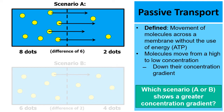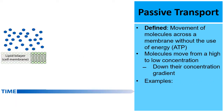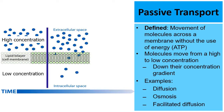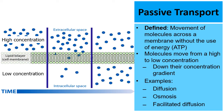Examples of passive transport include diffusion, osmosis, and facilitated diffusion — that's what the rest of this video is going to focus on. They all have something in common: there's a high concentration on the top of the membrane and a low concentration on the bottom, so over time the blue hexagon molecules will move until there's an equal balance of them.